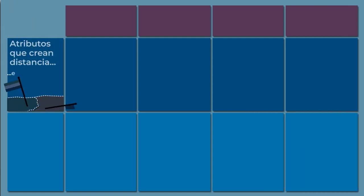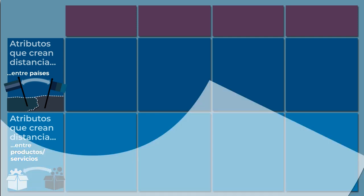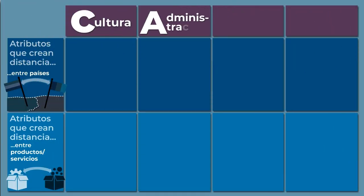Para explicar estas características, dibujemos una tabla. Pensemos que en la primera columna hay unos atributos que crean distancia. Dividimos la tabla en dos. Abajo colocamos los productos y servicios afectados por la distancia. En las siguientes columnas colocamos cultura, administración, geografía y economía.